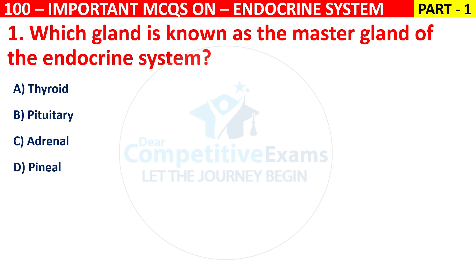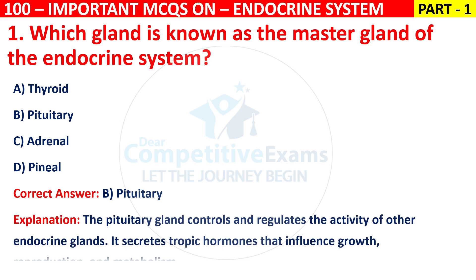The correct answer is B, that is pituitary gland. The pituitary gland controls and regulates the activity of other endocrine glands. It secretes tropic hormones that influence growth, reproduction, and metabolism.